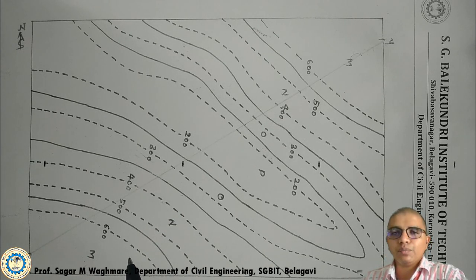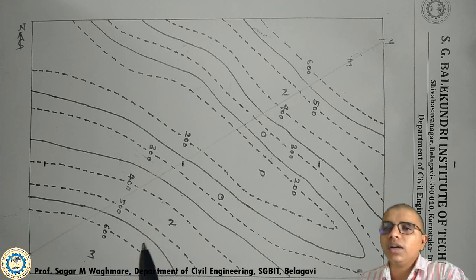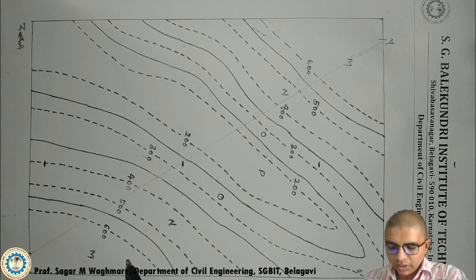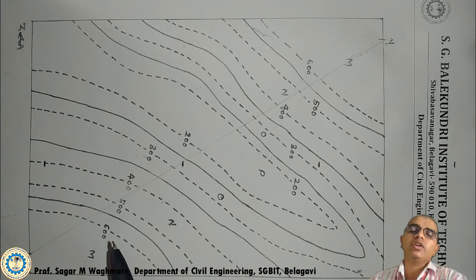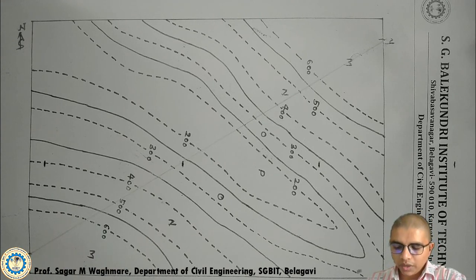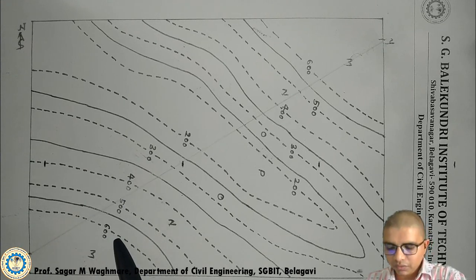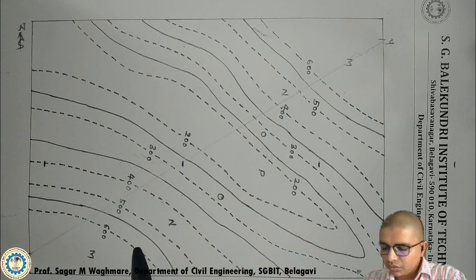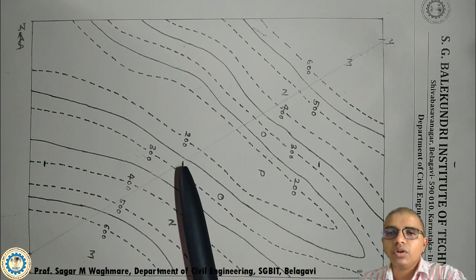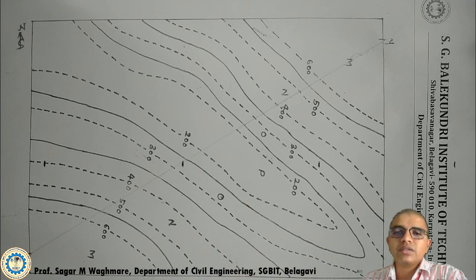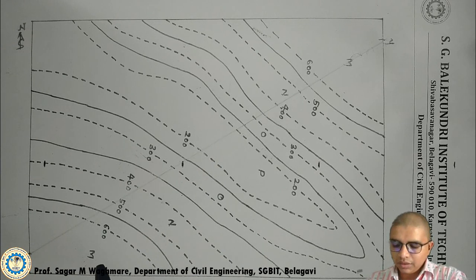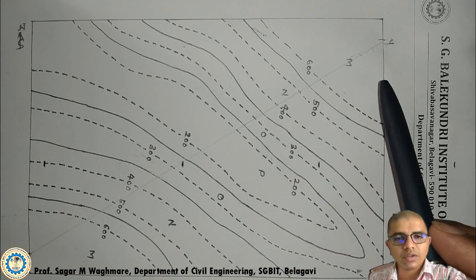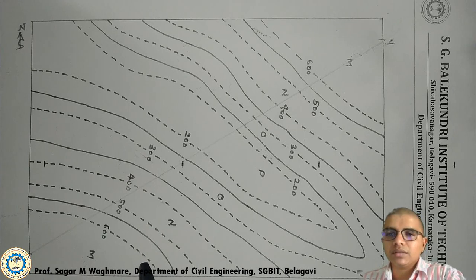In this map, you will see dotted lines and continuous lines. The dotted lines indicate the contour lines, while the continuous lines indicate the bedding planes. Contour lines are lines joining equal elevation, and that is the reason they have values — 600, 500, 400, 300, and so on. There are no values for the bedding planes, because the bedding planes are the lines which separate two beds. Here you will see a separation of M and N, N and O, O and P, and so on sequentially — this is nothing but the bedding planes.